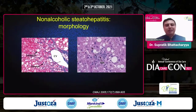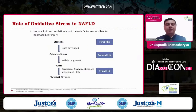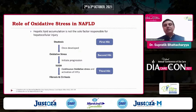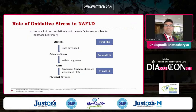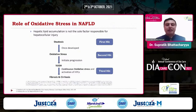Looking at the morphology, you have steatosis and fibrosis. It's an entire spectrum starting from steatosis, progressing to steatohepatitis and NASH, moving on to cirrhosis, and finally hepatocellular carcinoma. Hepatic lipid accumulation is not the sole factor for hepatocellular injury. The first hit is insulin resistance, and if oxidative stress progresses, there is a second hit that moves on to NASH. Continuous oxidative stress and activation of HPCs leads to fibrosis and cirrhosis.